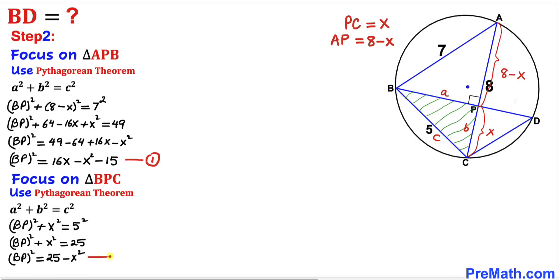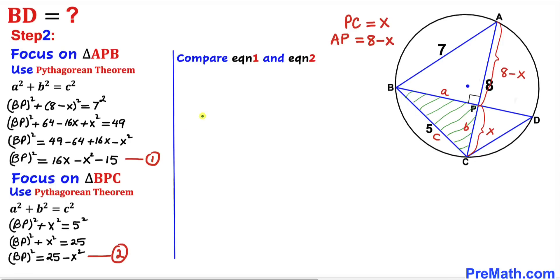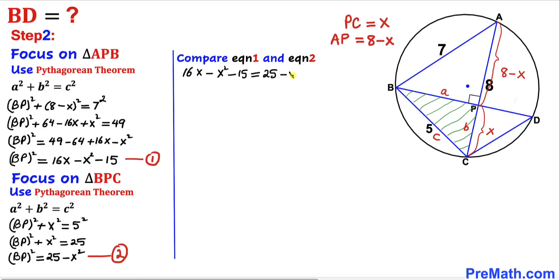Now let's compare equations 1 and 2. Since the left-hand sides are the same, we can equate the right-hand sides: 16X − X² − 15 = 25 − X². The −X² cancels on both sides, leaving 16X − 15 = 25. Adding 15 to both sides gives 16X = 40.